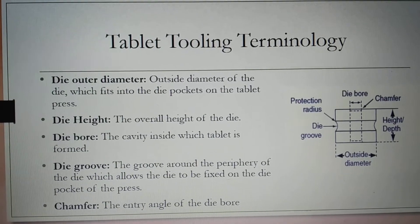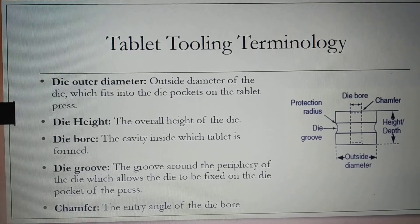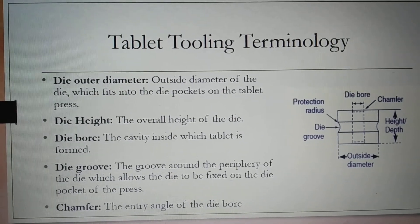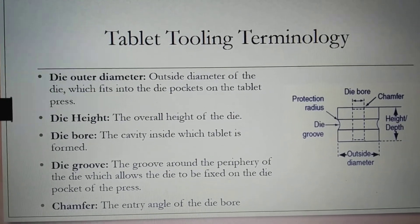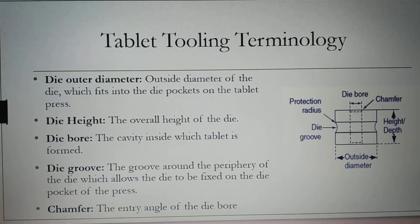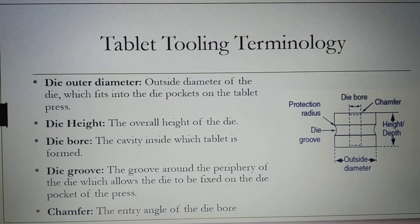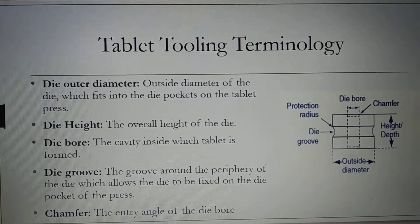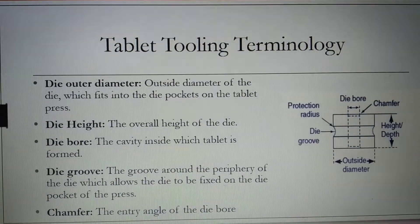The die groove is the groove around the periphery of the die which allows the die to be fixed on the die pocket of the press. And the chamfer is the entry angle of the die bore.